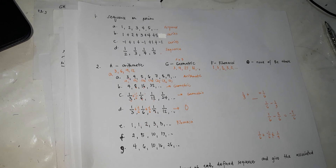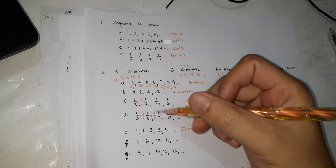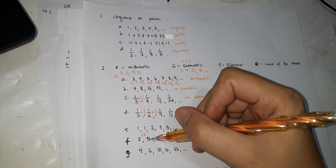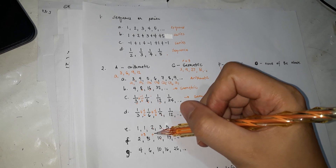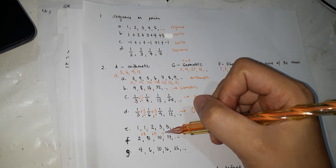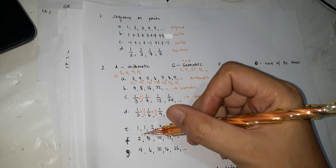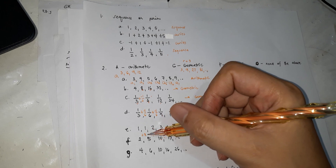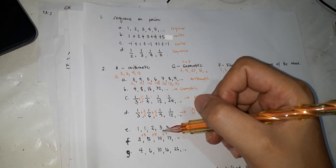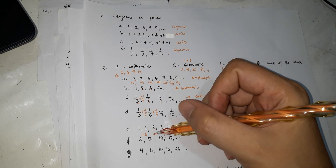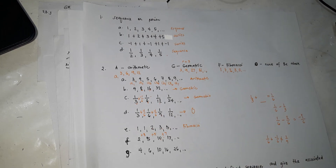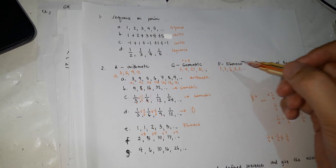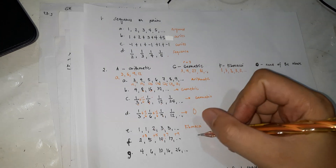Next: 2, 5, 10, 17. To get 5 you add 3, to get 10 you add 5, to get 17 you add 7. Notice what you're adding increases by 2 each time: 3, 5, 7 — they're odd numbers, and the next would be 9. So there's no common difference, it's not geometric, and it's not Fibonacci either. This is none of the above.